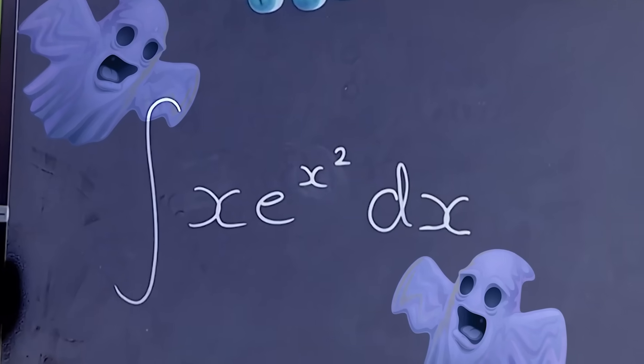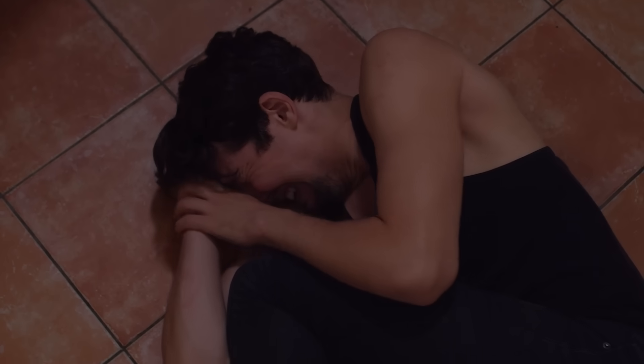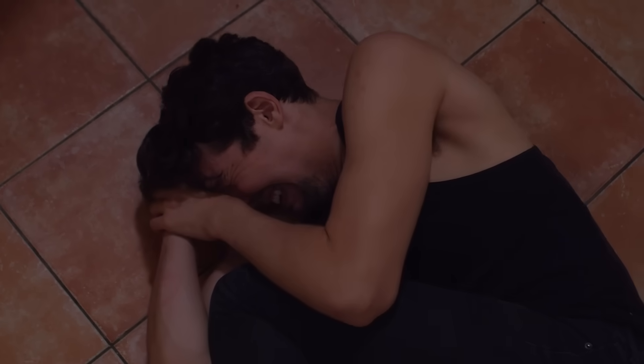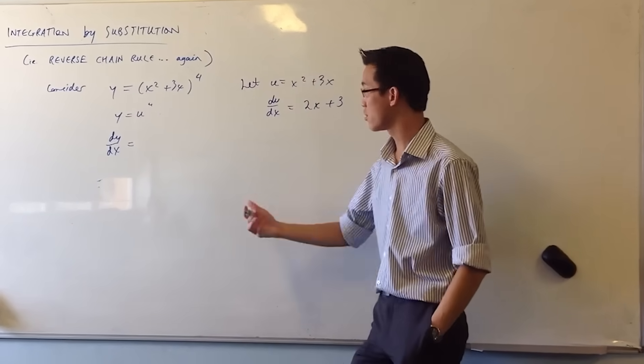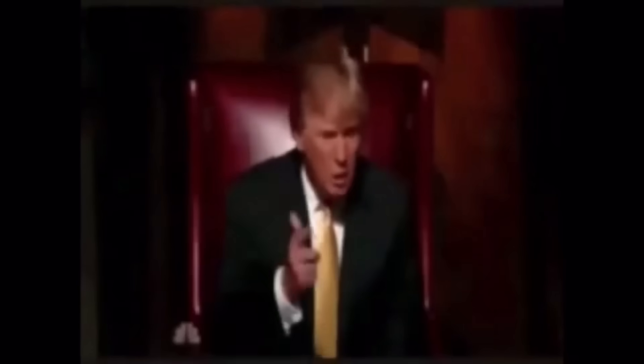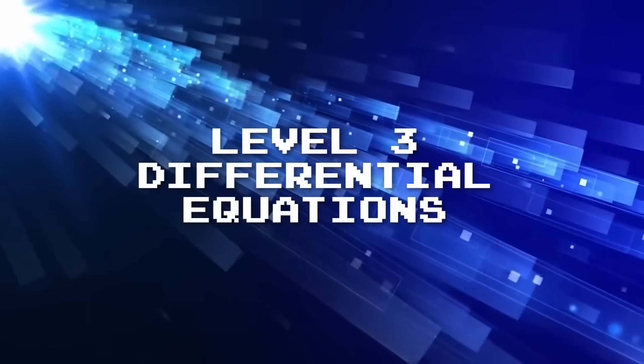Integrate x e to the x squared. Now you regret not listening in school, because if you did you'd be on level 2, and you'd know how to solve this using integration by parts and substitution. But instead you can't solve it, so your boss fires you on the spot, your girlfriend dumps you because she doesn't want to be with such a dumbass, and your parents disown you.